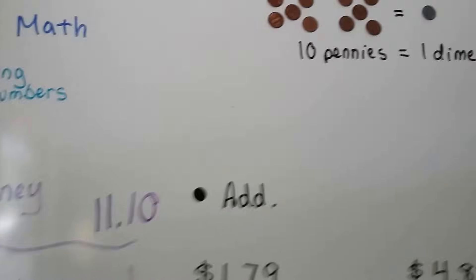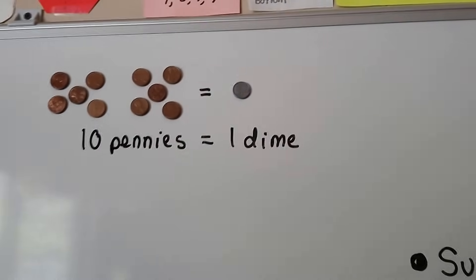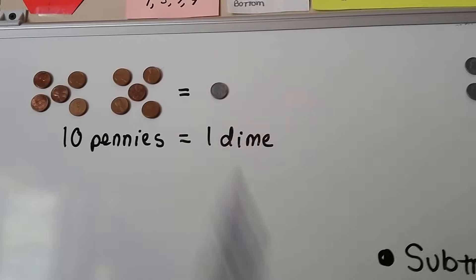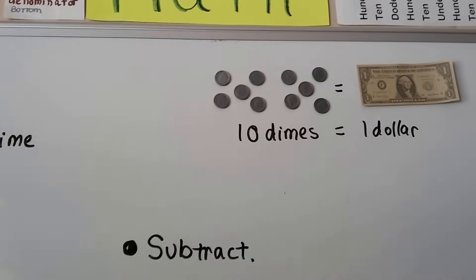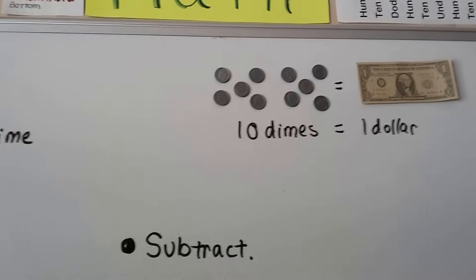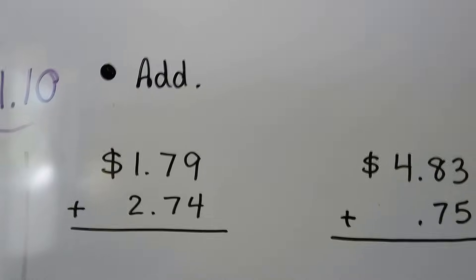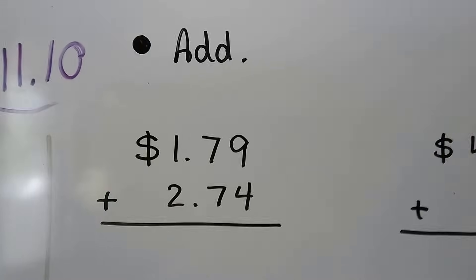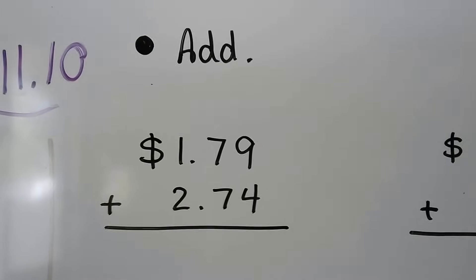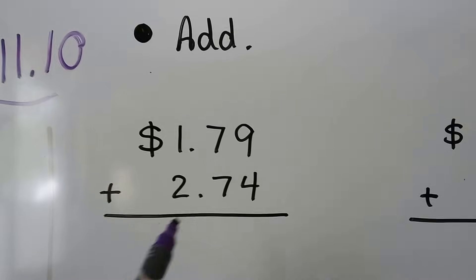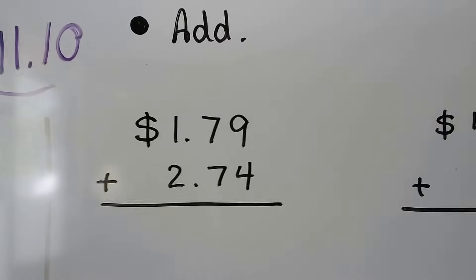Remember, ten pennies equal one dime — that's ten ones and we regroup it as a dime. And when we get ten dimes we can regroup it as a dollar because that's ten tens. So let's see if we can add these and we're going to follow the same rules as we did adding three-digit numbers. We just now have this decimal point and a dollar sign that we have to put in.